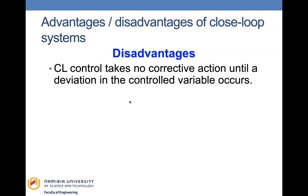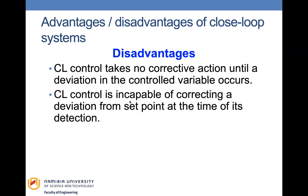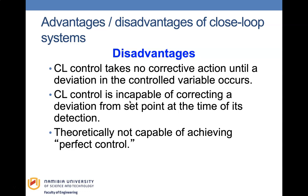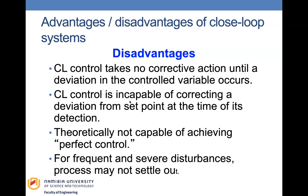The disadvantages of closed loop control are that it takes no corrective action until a deviation in the control variable occurs, and it is incapable of correcting a deviation from the set point at the exact time of its detection — the signal must go to the control system before correction is made. Theoretically, it is not capable of achieving perfect control, though it is as precise as possible. For frequent and severe disturbances, the process may not settle out.